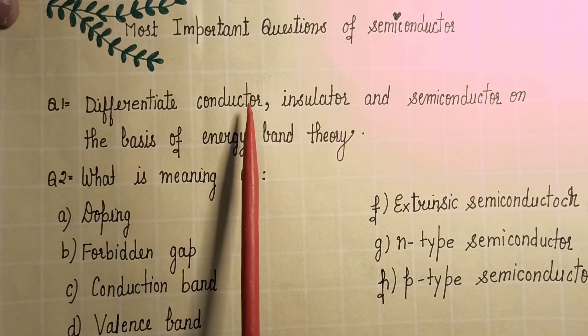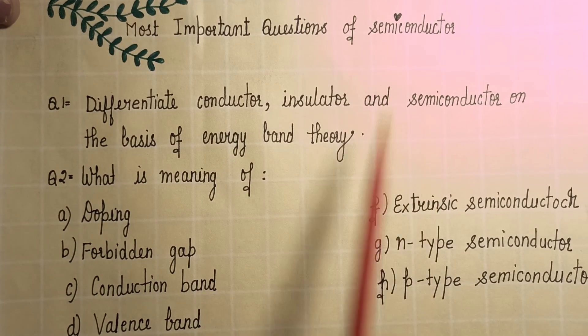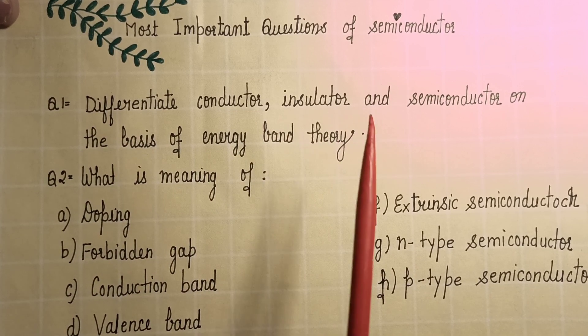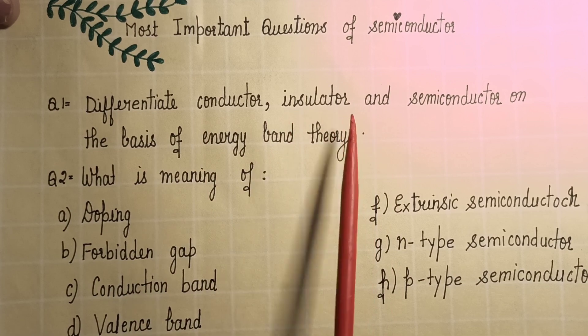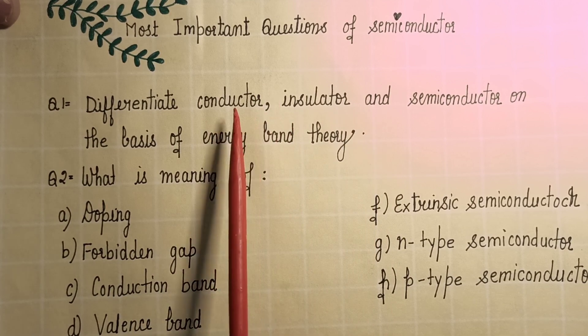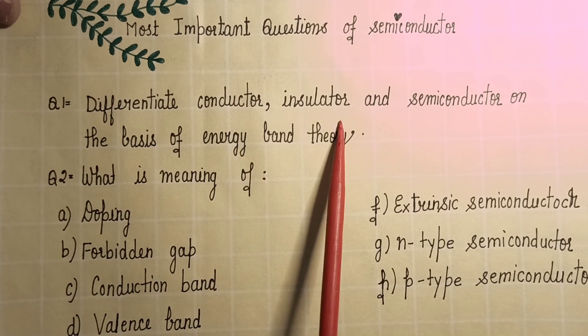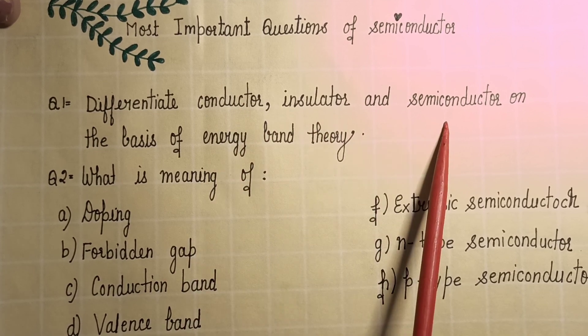The first very important question from this topic is: differentiate conductor, insulator, and semiconductor on the basis of energy band theory. That is, you have to form the energy band diagram of these three and you have to tell in which material what is the energy gap prescribed or the range of energy gap on the basis of which behavior of these three differs.